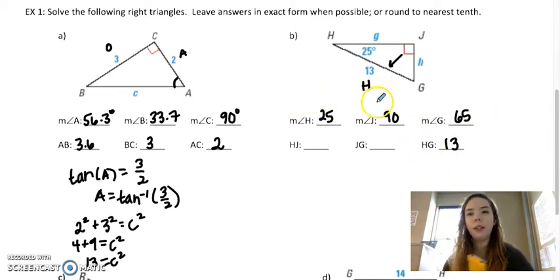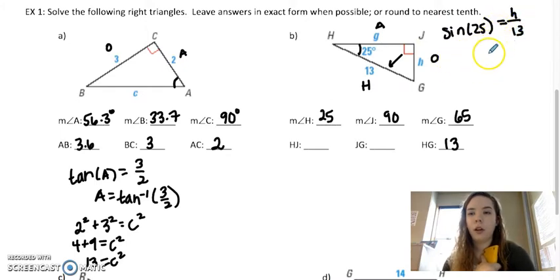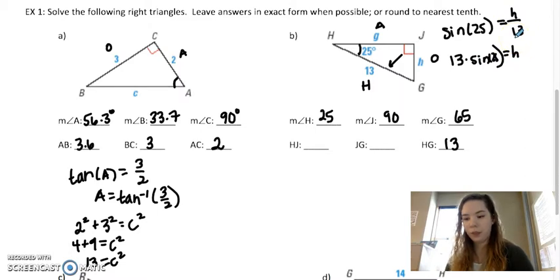From here, I'm gonna say let's want, we want to find H first, or side JG. From angle 25, this is opposite, this is adjacent from this angle. So I'm gonna go ahead and use sine so I can use opposite and hypotenuse because I know my hypotenuse. So sine of 25 equals H over 13. So H equals 13 times sine of 25. So I'm going to put that in my calculator. And I get 5.5 when it's rounded.